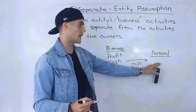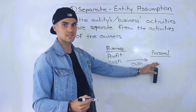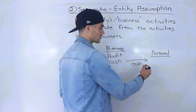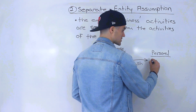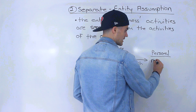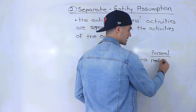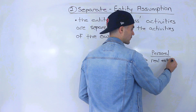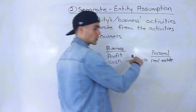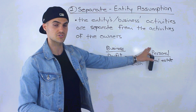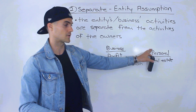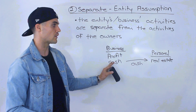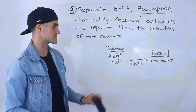Maybe you want to buy your parents some kind of car or house, or you want to buy yourself a house. Let's say you're buying some real estate for yourself, and you're going to rent it out, but it's going to be on your personal side. It has nothing to do with the business.